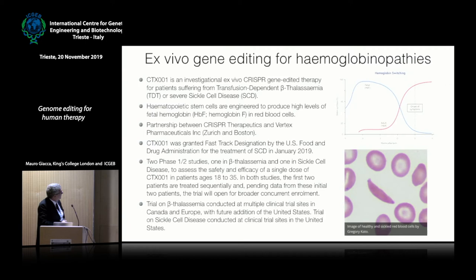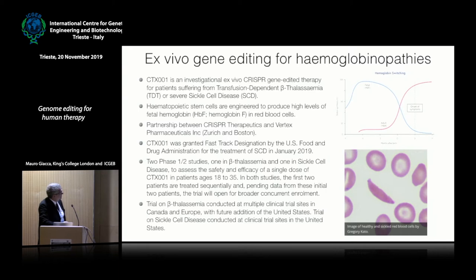There are two trials for hemoglobinopathies. The two diseases addressed by this strategy are transfusion-dependent beta-thalassemia and sickle cell anemia — both conditions for which there is essentially no therapy. The strategy here relies on an indirect approach: remember that when we are in the womb, most hemoglobin is made by the gamma chain, giving rise to what is called HbF — fetal hemoglobin — which has a stronger affinity for oxygen, allowing the fetus to draw oxygen from the mother's red blood cells.